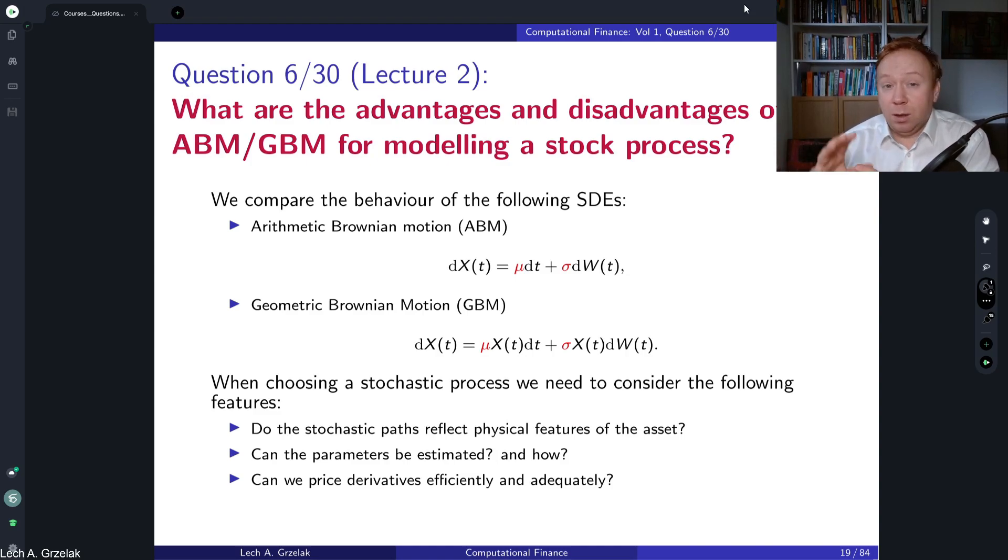So first step, if there are options like calls and puts, we should calibrate our model to calls and puts because those are available. Then using those model parameters in this model with the calibrated model parameters, we should price the exotic derivative.